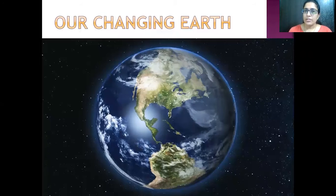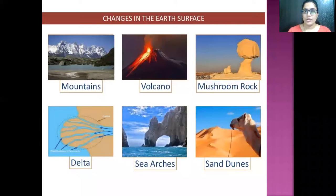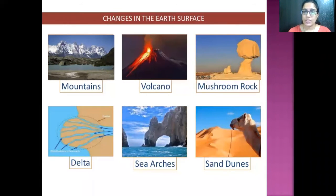The earth is a dynamic planet; it keeps on changing throughout. There are different types of landforms on earth's surface, such as mountains, volcanoes, mushroom rocks, delta, sea arcs, sand dunes, and many others.